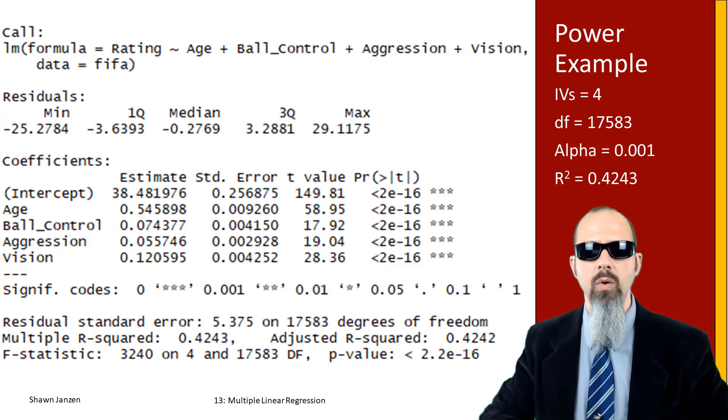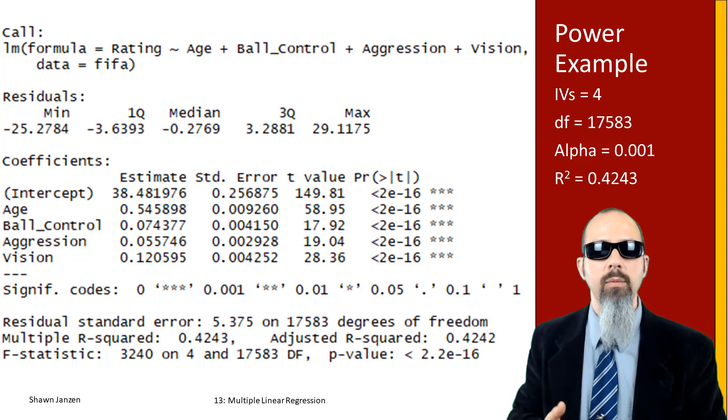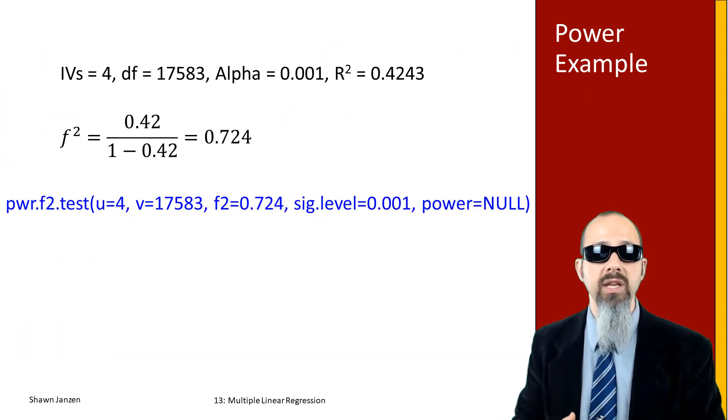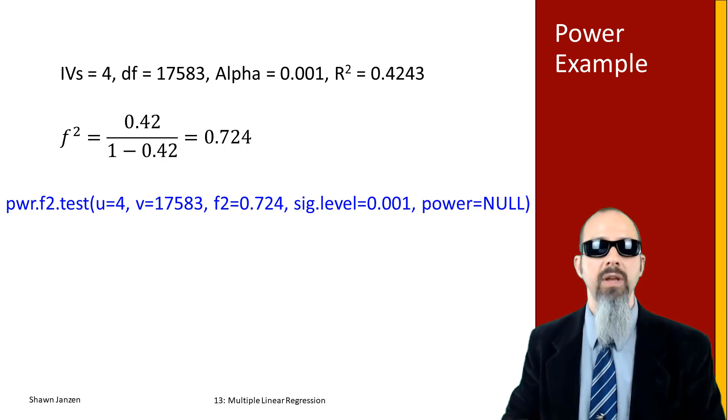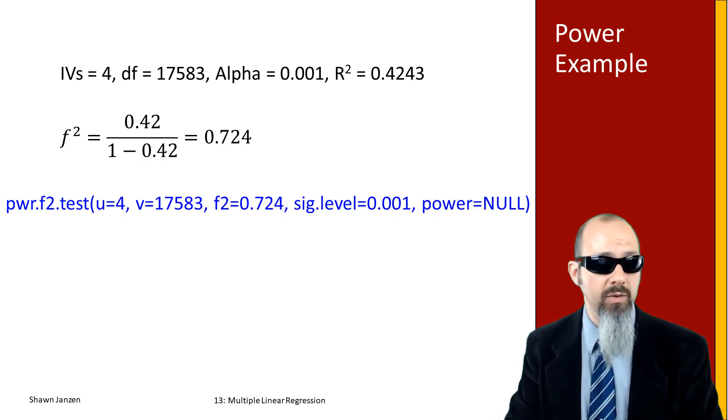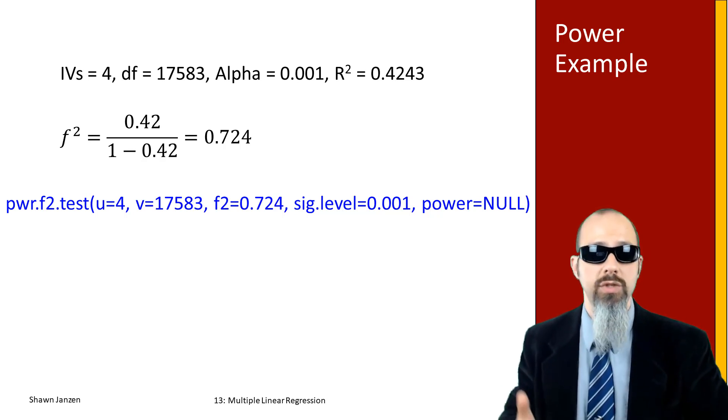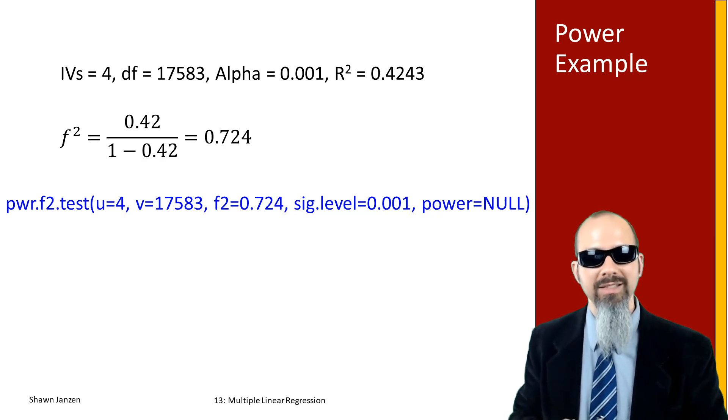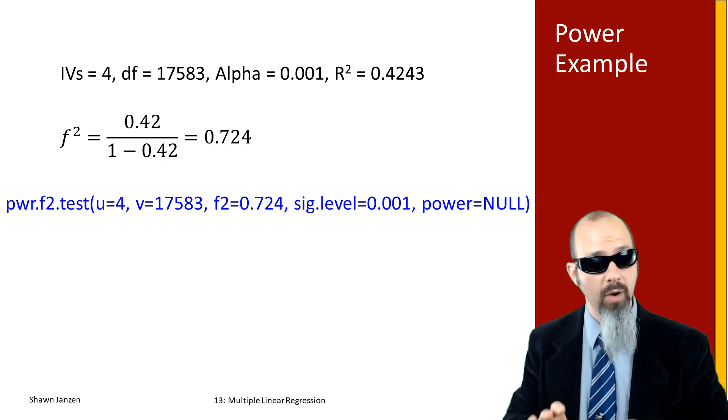My r² is pretty much the same whether I look at the multiple or the adjusted - it's almost identical. When I'm rounding it to 0.42, it doesn't matter which one I'm pulling from. But we also need that fifth value - we need the f². I'm going to use r² to help calculate f², and that comes up with an f² effect size of 0.724, which is huge.